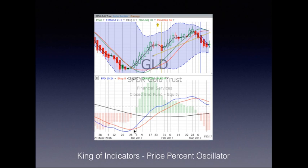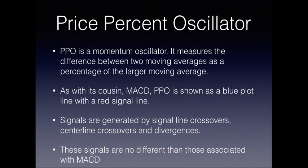When the blue line crosses over the red going up, or crosses over the red going down, a signal is generated. These signals are no different from those associated with the MACD, so if you're familiar with the MACD, you'll be very comfortable using the Price Percent Oscillator.